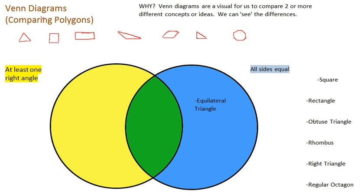The square, well the square has—it does have at least one right angle, has four, and all sides are equal. So they match both yellow and blue. Yellow and blue make green, so I'm going to place it right in the middle.